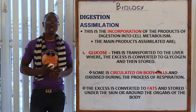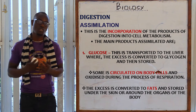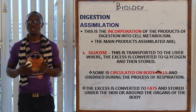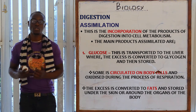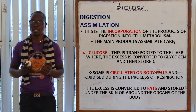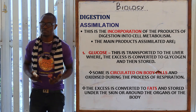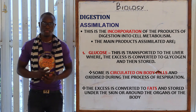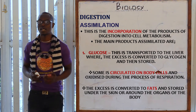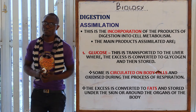Some of the glucose is circulated and oxidized during respiration, as glucose is the main raw material for respiration — the energy-producing mechanism inside the cell. Excess glucose is converted to fats and stored under the skin or around the organs.